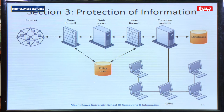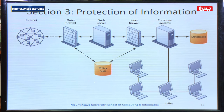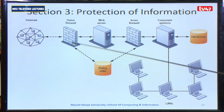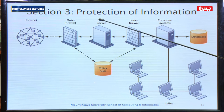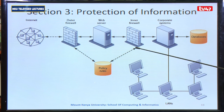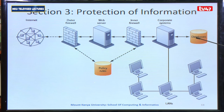Moving on to section three. Now that we understand threats and vulnerabilities, how do we make sure that our information is protected? To protect information, we need to understand the infrastructure that carries it — from the internet to the outer firewall of an organization, which protects the web server. Then we have the inner firewall, which protects the corporate system, such as the management information system, and also the databases hosted within the corporate system, giving us access to the LAN.